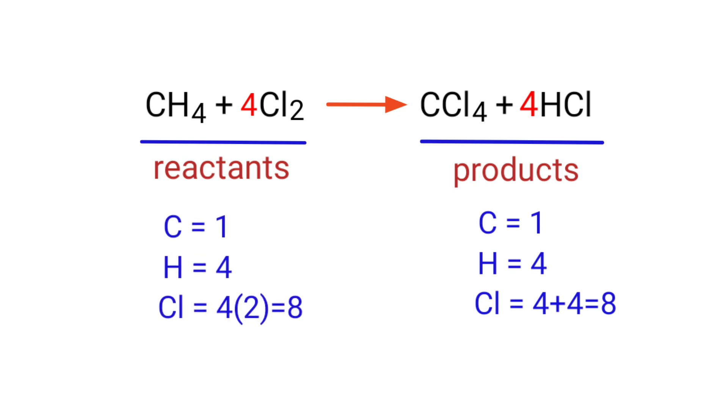The equation is now balanced. There are one carbon atom, four hydrogen atoms, and eight chlorine atoms on both sides.